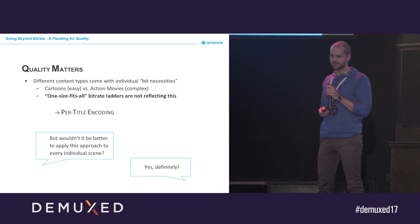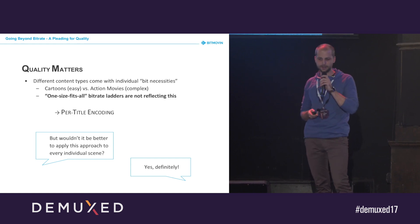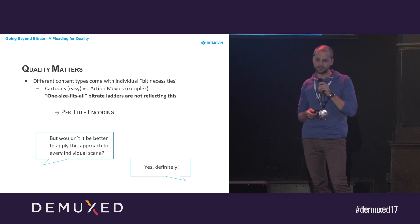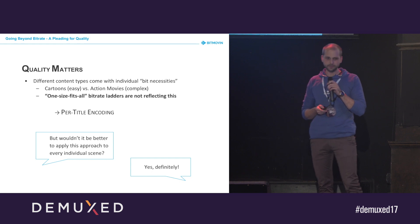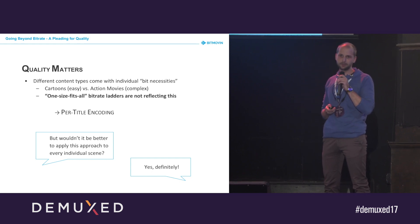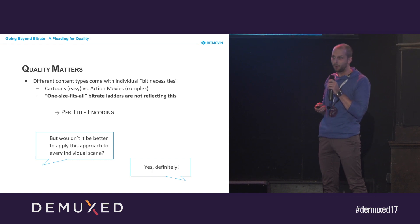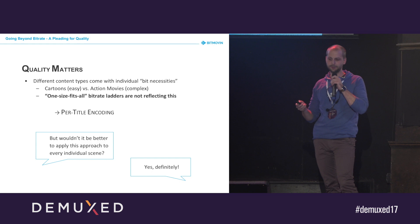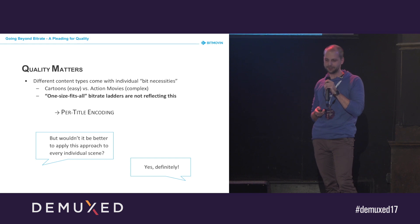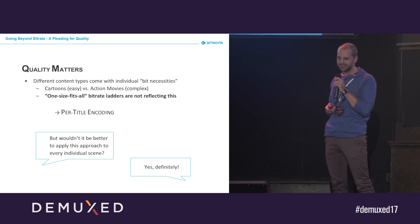Different content types come with individual bitrate necessities. If you think of cartoons, for instance, they're quite easy content — low complexity scenes — and 5,800 kilobits per second might be enough or even too much. Versus action movies where Arnold Schwarzenegger is kicking ass: you have super high complexity, a lot of motion going on — a very complex scene — and then 5,800 kilobits per second won't be that much anymore.